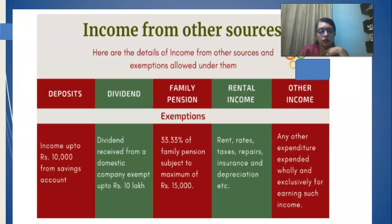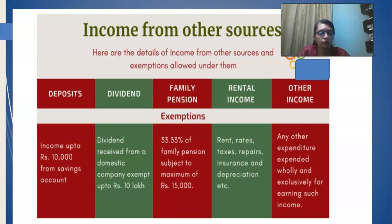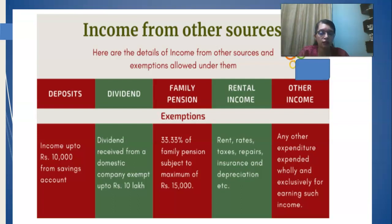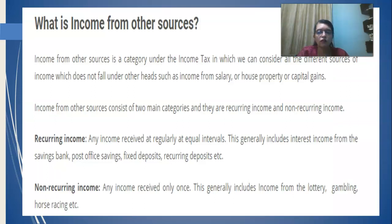If you look at this slide, we can see that deposits — that is fixed deposits — so if you are getting interest from a saving deposit account, all these are part of income from other source. Dividend received, family pension, rental income when you are not the owner but sub-leasing or sub-letting, and any other income which is non-recurring in nature, for example winning from lottery tickets — all these are characterized under income from other source.